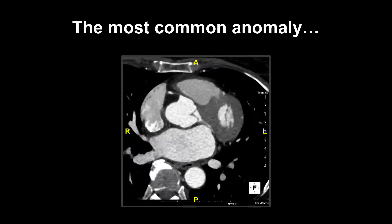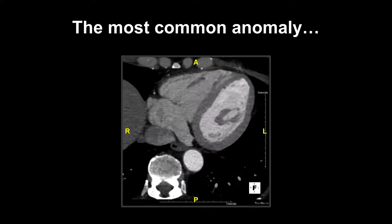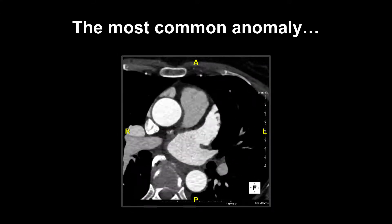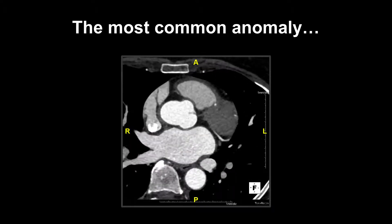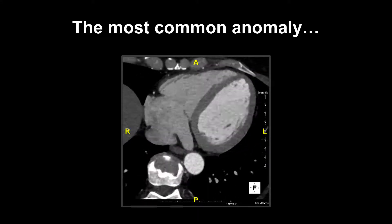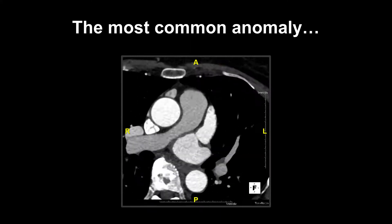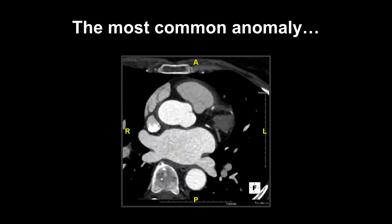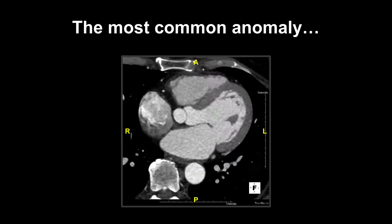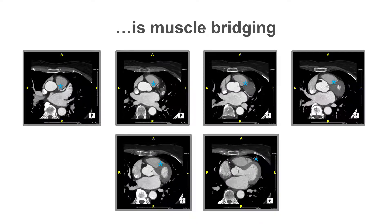This is an example of the most common coronary anomaly. Can you identify what this is? The most common congenital coronary anomaly is known as muscle bridging or myocardial bridging, and this case demonstrates myocardial bridging.